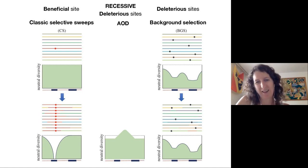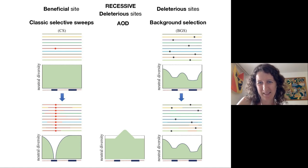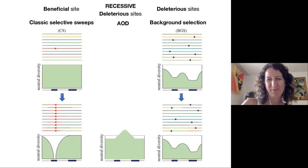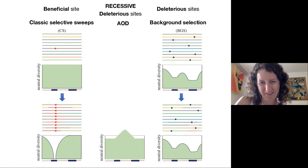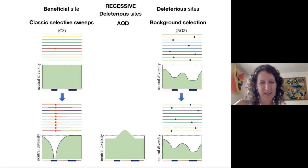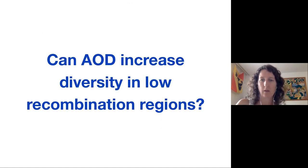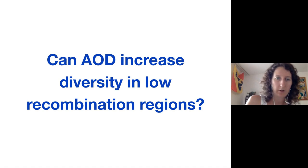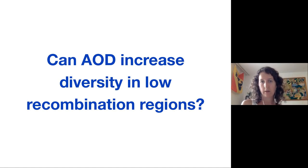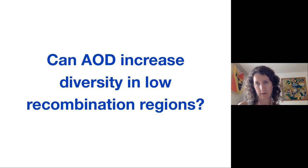The major question in this project was: can associative overdominance actually increase diversity in lower recombination regions? Is it an important process in the wider view of evolution and what is changing genomic diversity?